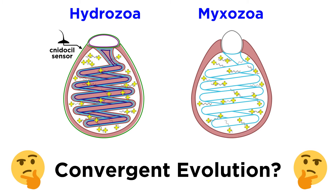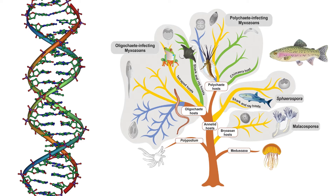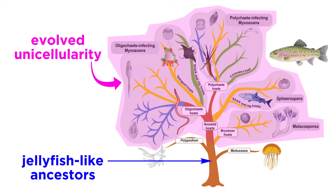This was originally attributed to convergent evolution, where two unrelated organisms develop similar characteristics, like wings evolving in both birds and bats. However, further genetic analyses revealed that the mixozoans are actually highly-derived cnidarians that evolved into single cells from free-swimming jellyfish-like ancestors, making them animals.